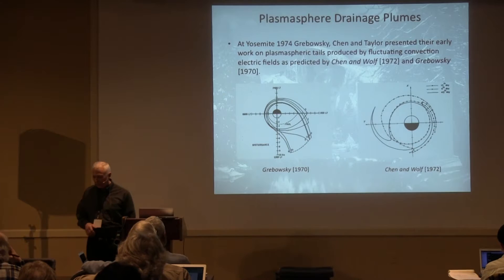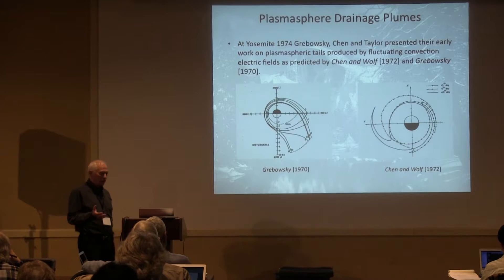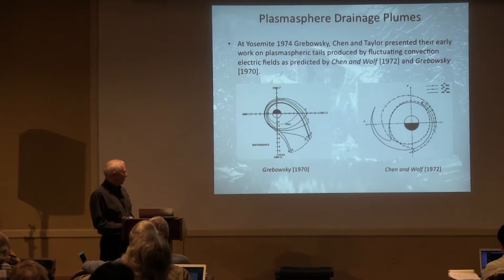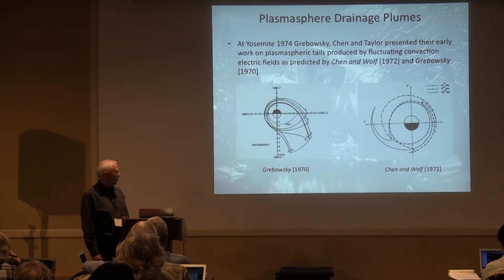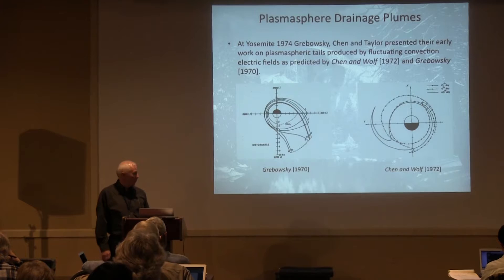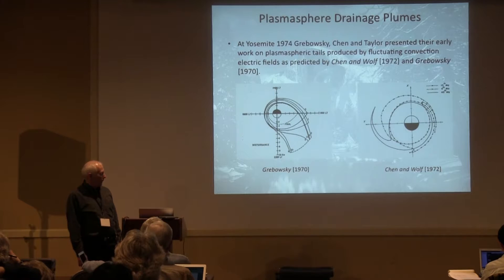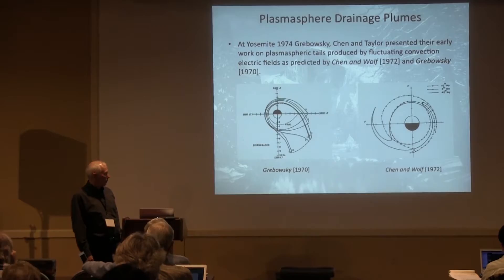A hot topic at Yosemite '74 was plasmaspheric drainage plumes. We had people here like Abel Chen and Joe Grabowski. In Grabowski's 1970 model — you see with time, the hours after onset from zero out to ten hours — you see that drainage plume in the afternoon sector. Then Chen, with Dick Wolf, published a paper in 1972 showing a rather narrow plasma tail, and on the right part of the picture you can see multiple tails wrapping around.